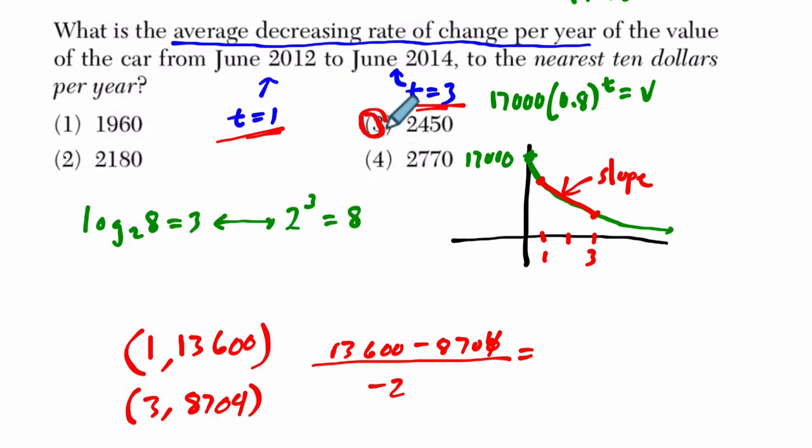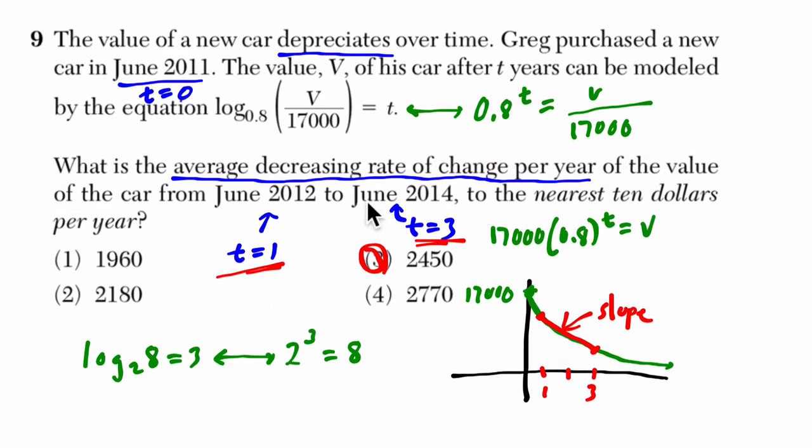Now the answer here is positive, because they want to know how much it has gone down. In other words, our function tells us it's lost $2,450 in value on average per year. But if you're counting how much you lost, you can count that as a positive number. It's $2,450. You could say you've lost $2,450. If you said you've lost negative $2,450, that's actually going up, right? You'd be losing a negative. Anyway, I hope that helps.